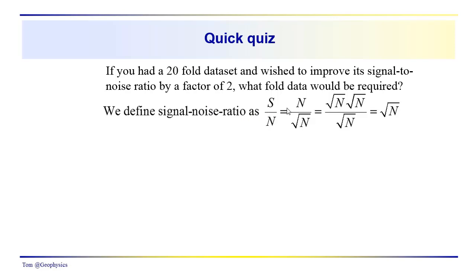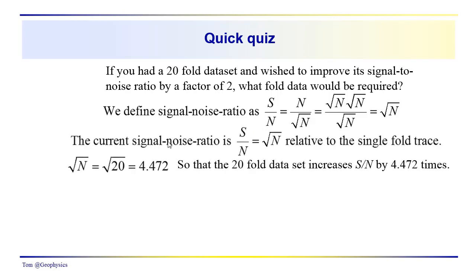The signal-to-noise ratio just by definition is N, the number of traces, over the square root of N. And just working through the algebra here we get the signal-to-noise ratio is equal to the square root of the number of traces that you've collected. So we have this basic relationship here and the current signal-to-noise ratio is going to be equal to the square root of N relative to a single trace.